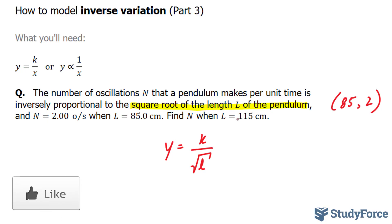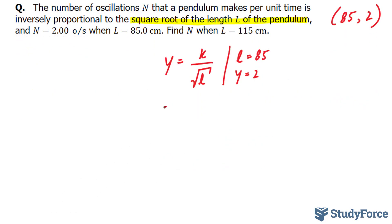Now we have to find n when l is 115. I'll set my l as 85 and my y as 2, giving me 2 is equal to k over the square root of 85.